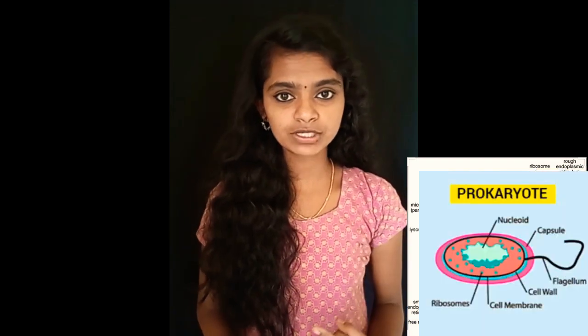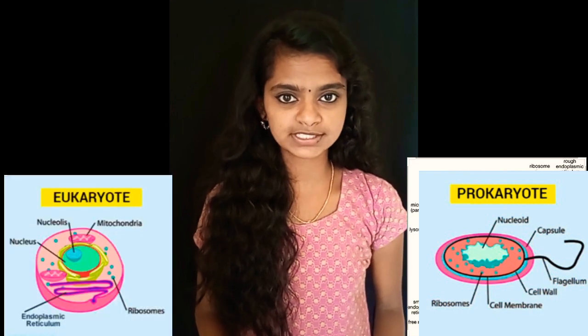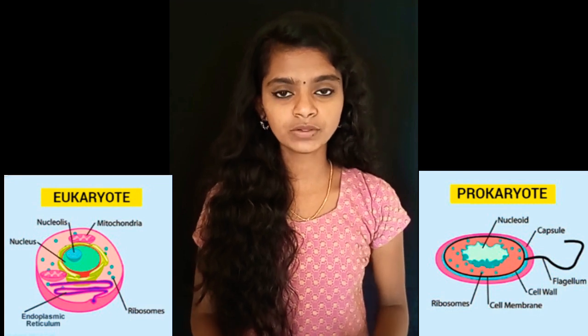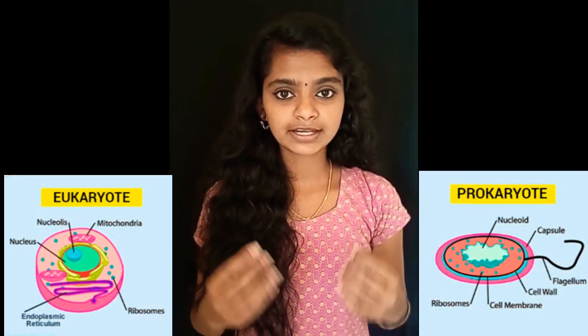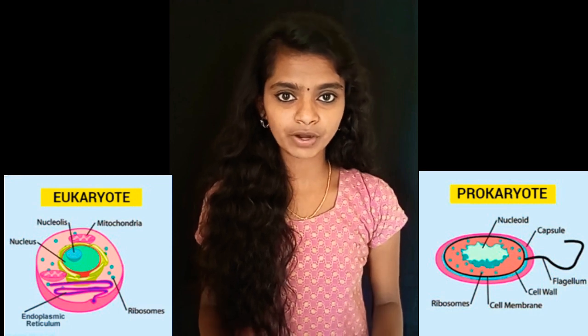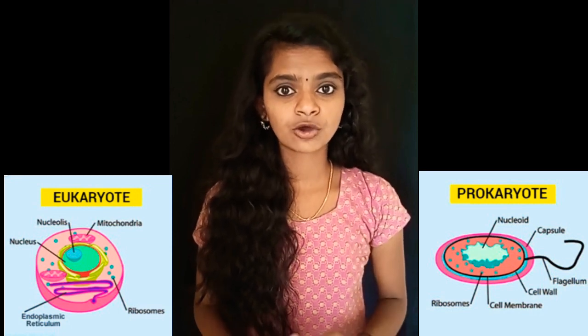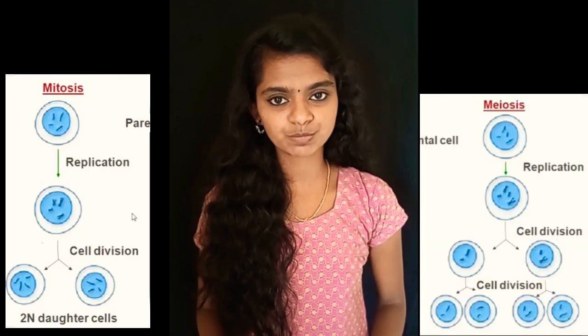Cell has 2 types: one is prokaryotic cell and another is eukaryotic cell. Prokaryotic cells are cells without a nucleus, and eukaryotic cells are cells that have a true nucleus and also membrane-bounded organelles. The organelles in the prokaryotic cell are only ribosomes. There are also 2 types of cell division: one is meiosis and the other is mitosis. In the next video, we will discuss in brief the various organelles in cell and also the cell types — prokaryotic cell and eukaryotic cell — and the cell divisions, meiosis and mitosis.